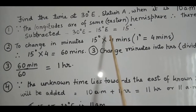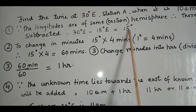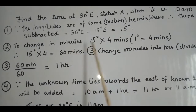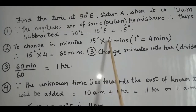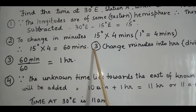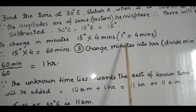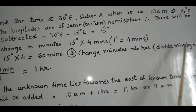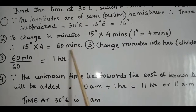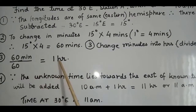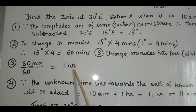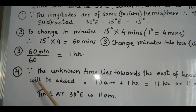The second step is to change degrees into minutes. Since one degree equals four minutes, 15 degrees multiplied by 4 gives 60 minutes. The third step is to change minutes into hours by dividing by 60. 60 divided by 60 equals 1 hour.